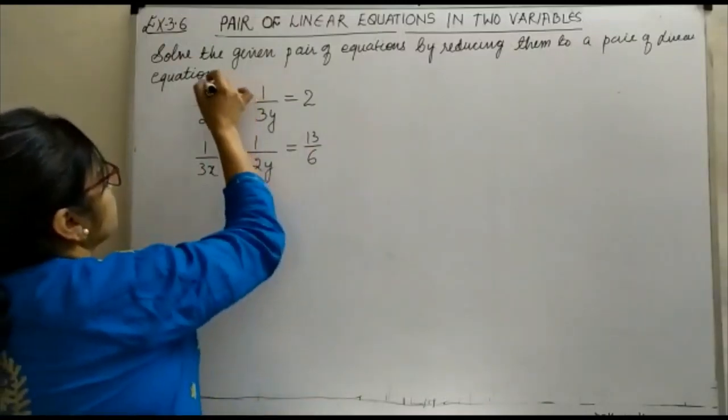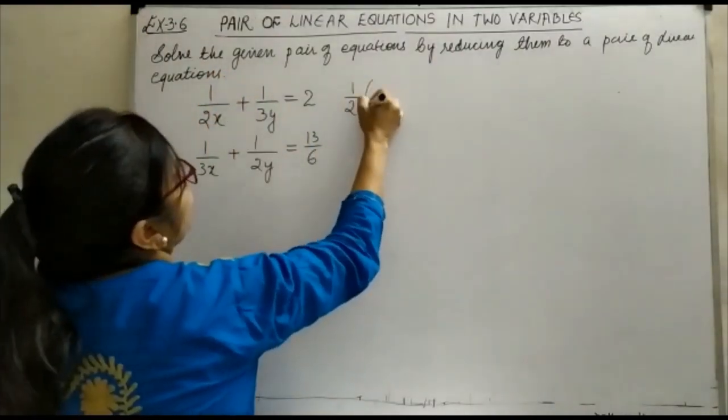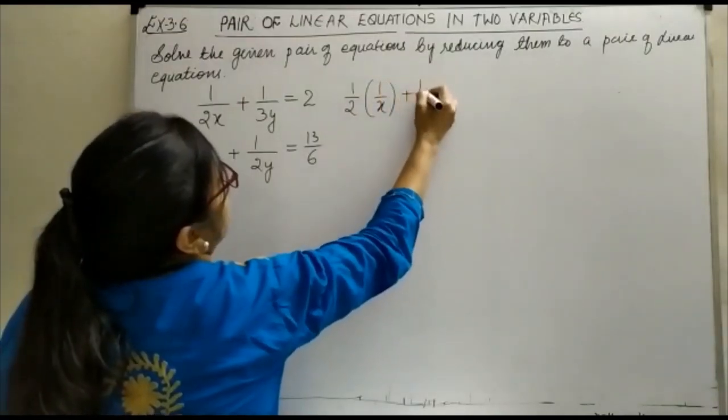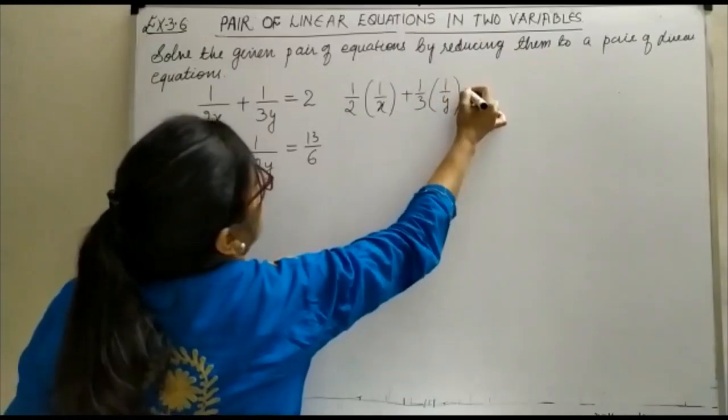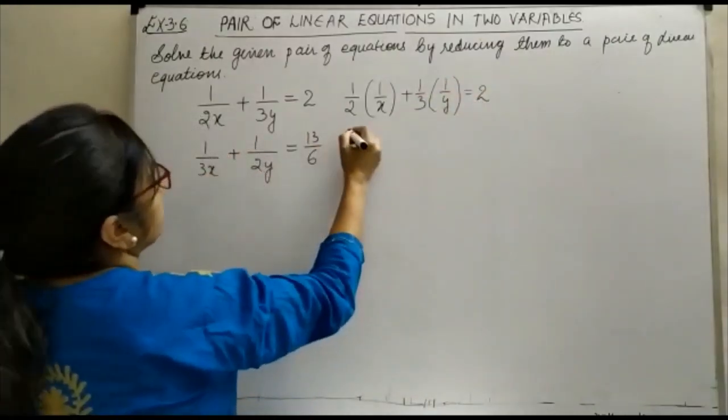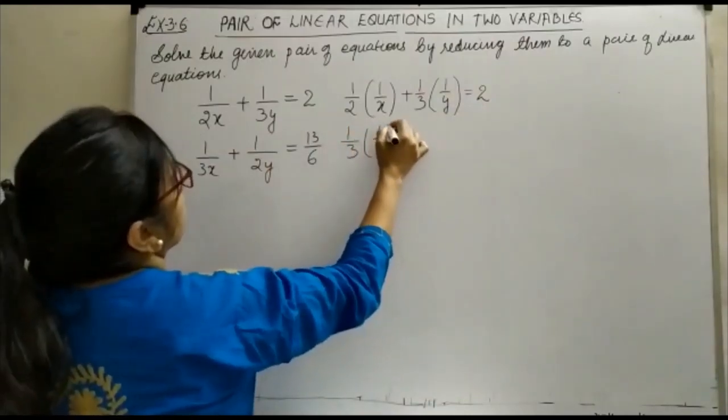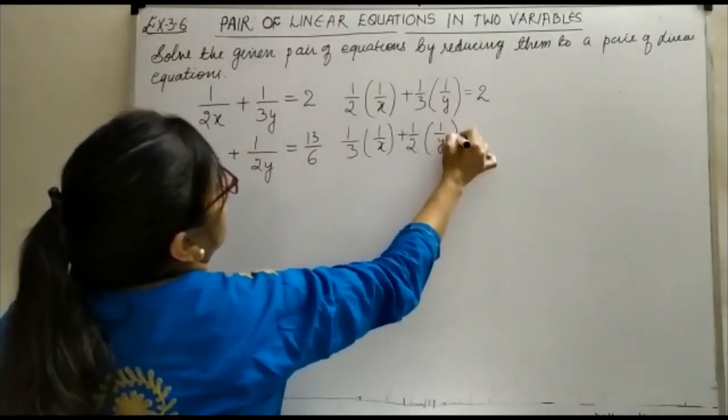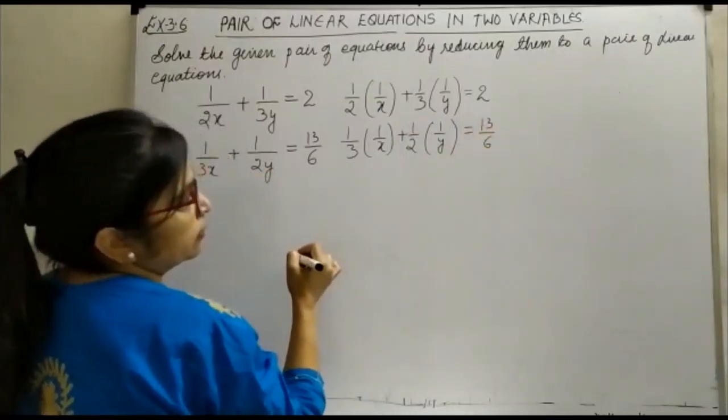Just see here, your this term, this can be written as half 1 upon x plus 1 by 3, 1 upon y is equal to 2. And similarly, your second equation can be written as 1 by 3, 1 upon x plus 1 upon 2, 1 upon y is equal to 13 upon 6.